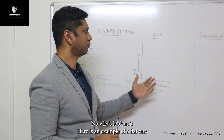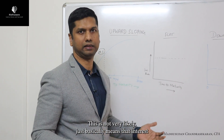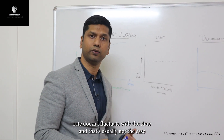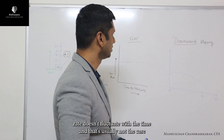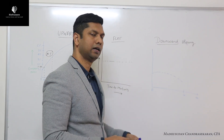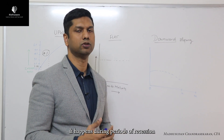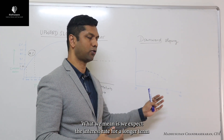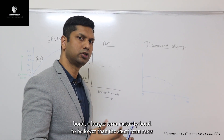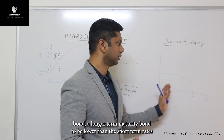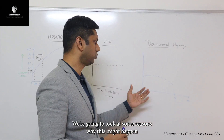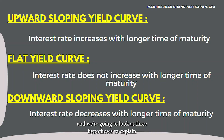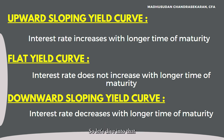Here's an example of a flat yield curve. This is not very likely — it basically means the interest rate doesn't fluctuate with time, and that's usually not the case. The downward sloping yield curve is also rare; it happens during periods of recession. What we mean is that we expect the interest rate for a longer-term maturity bond to be lower than short-term rates. We're going to look at three hypotheses to explain the yield curve or the term structure of interest rates.